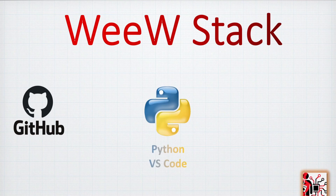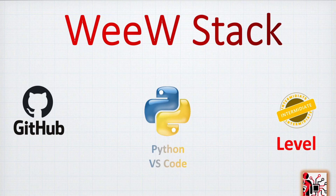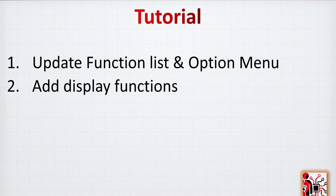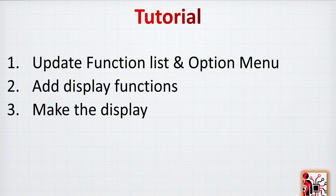All the code is in Python and the text editor will be VS Code. I would expect people following this video to have reviewed the previous parts of the tutorial, so it will be extremely easy to follow along. For today's tutorial, we have only three parts: first, we need to quickly update the function list and the option menu; then we are going to add the display function; and finally, we will make the display itself. Okay, let's start and have a look at the code.